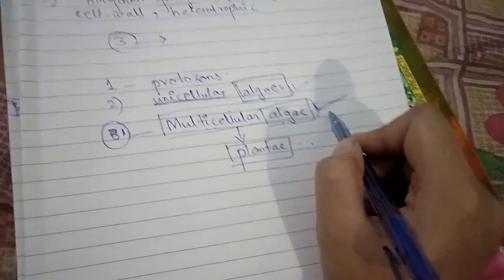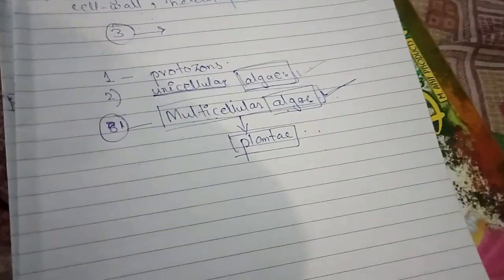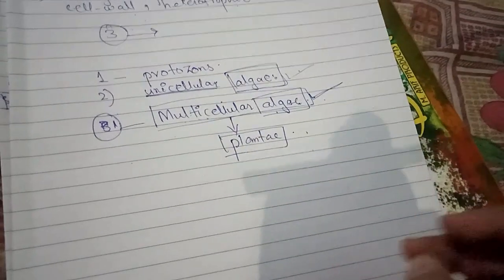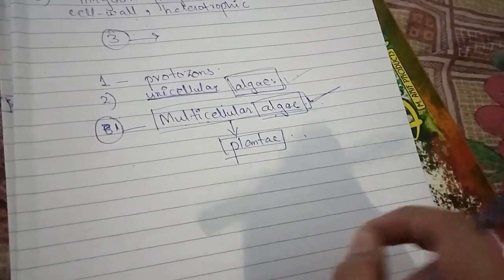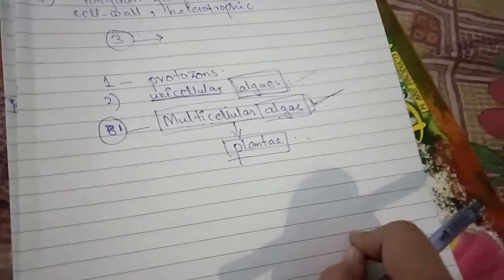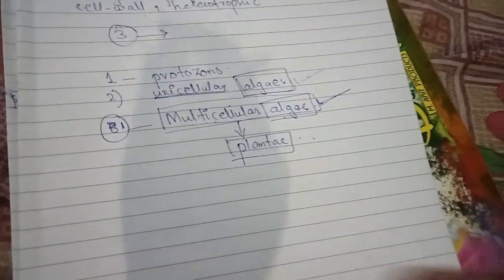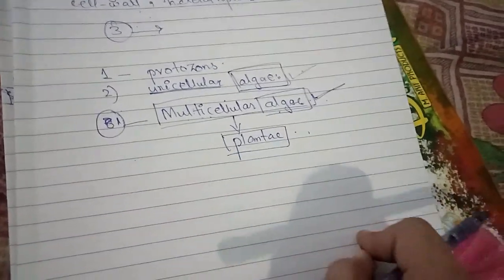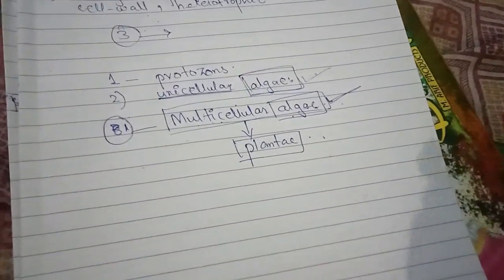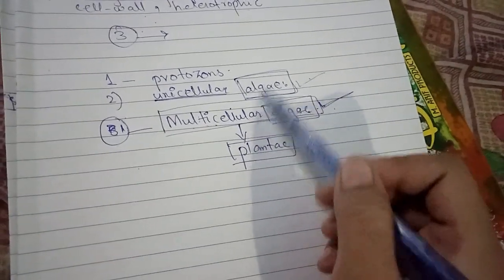This remaining problem of multicellular algae attracted two scientists who worked to solve it. In our next video, we will study which two scientists arranged the classification in the right way and finished this problem.